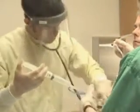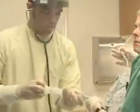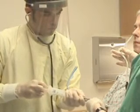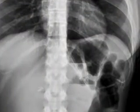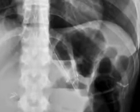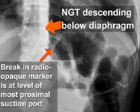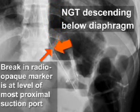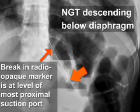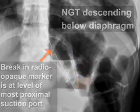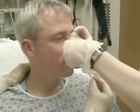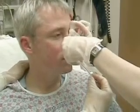It should be noted that auscultation and aspiration may occasionally provide false positive results. Therefore, radiographic confirmation of tube placement by visualizing the NG tube's descent below the diaphragm should be obtained prior to infusion of any substance, such as activated charcoal or oral contrast media. The tube should be secured to the patient prior to transport to the radiology suite.